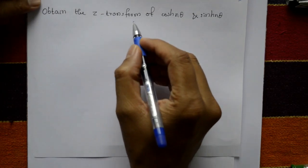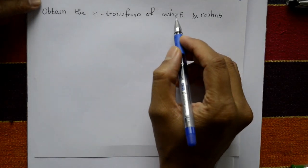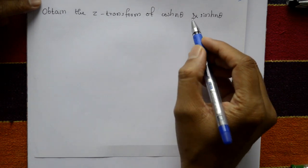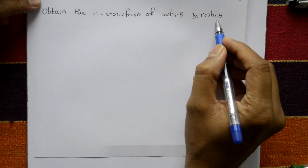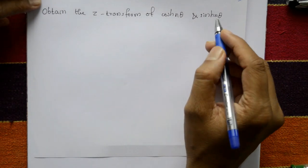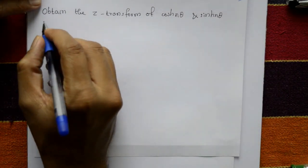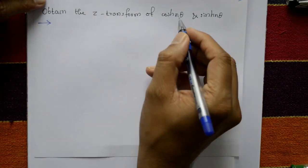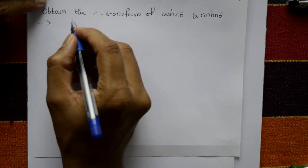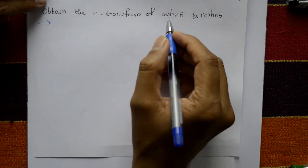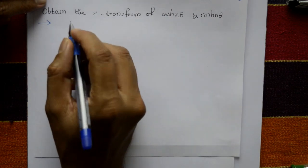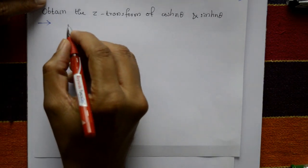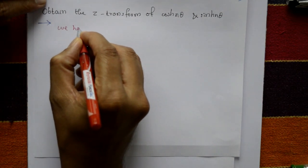We need to obtain the Z-transform of hyperbolic functions cosh(nθ) and sinh(nθ). We will solve these one by one using the standard formulas.